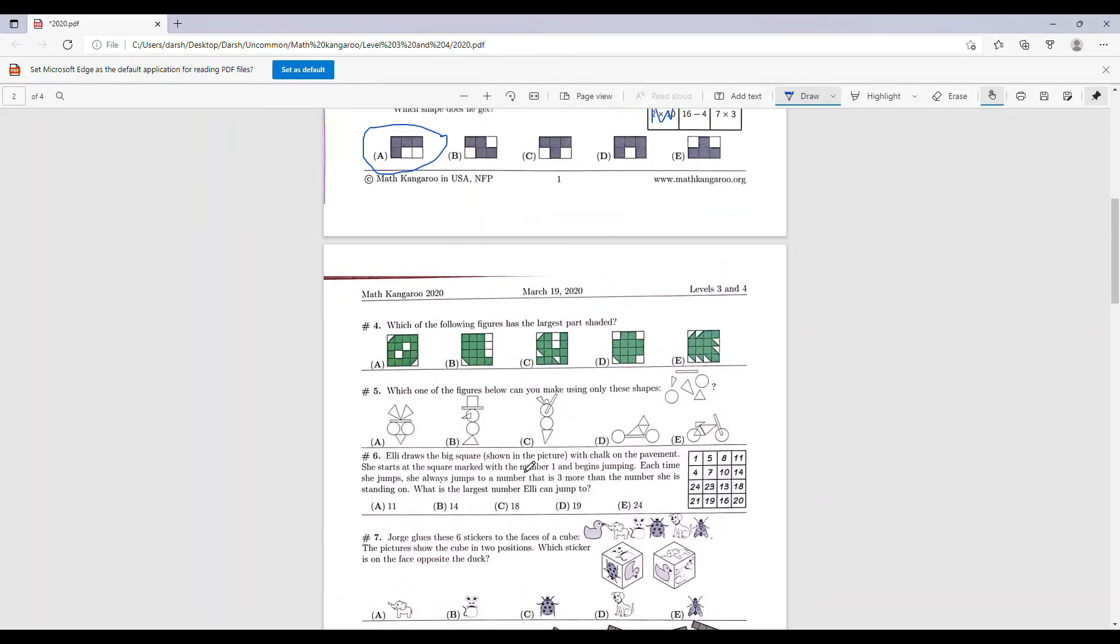Number 4. Which of the following figures has the largest shaded part? Let's start with A. Let's count how many full ones first. We have 1, 2, 3, 4, 5, 6, 7, 8, 9, 10, 11, 12. So we have 12 full squares.